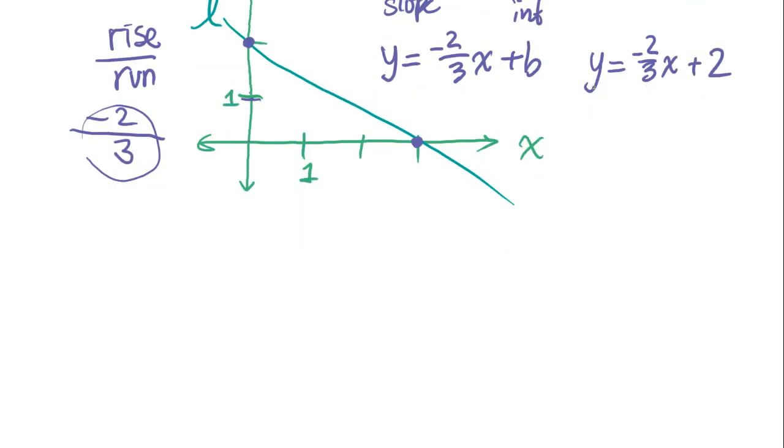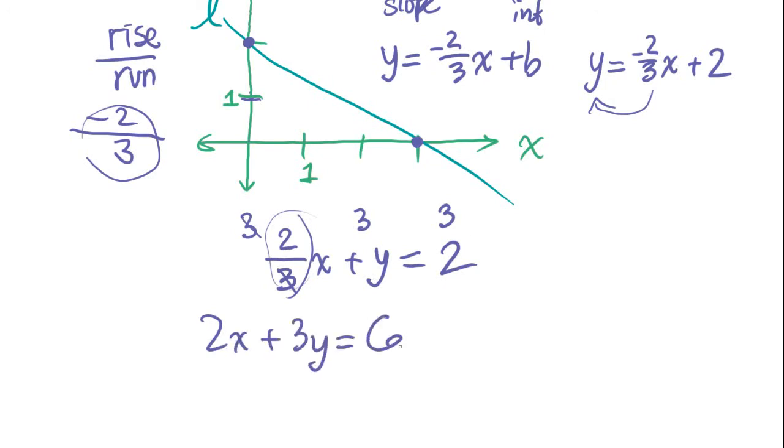Now what we want to do is turn this into an x plus y form. We can do that by moving the x over, and what we end up with is 2 over 3x plus y equals 2. And that is not one of the answer choices because in the answer choices, they don't have any fractions. We can solve that by multiplying that by 3, and that by 3, and that by 3. And what we get is 2x plus 3y equals 6. And that is one of the answers. That's answer b.